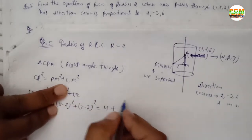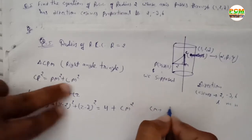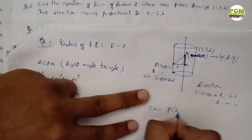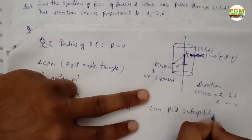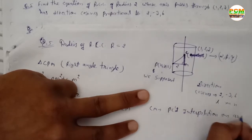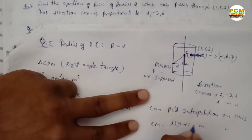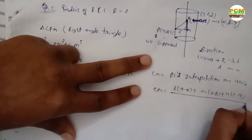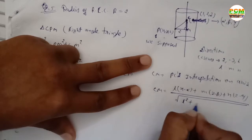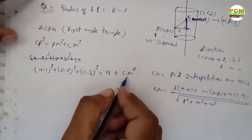CM is the projection onto the cylinder's axis. The formula for CM is: CM = [l(x-α) + m(y-β) + n(z-γ)] / √(l² + m² + n²). Here alpha, beta, gamma can be taken as the point (1, 2, 3), so we now substitute the values.